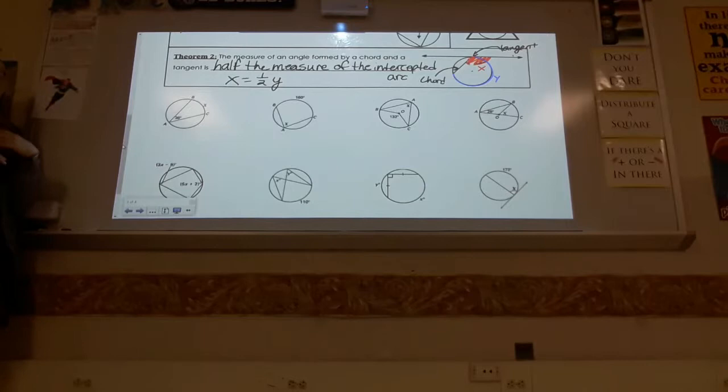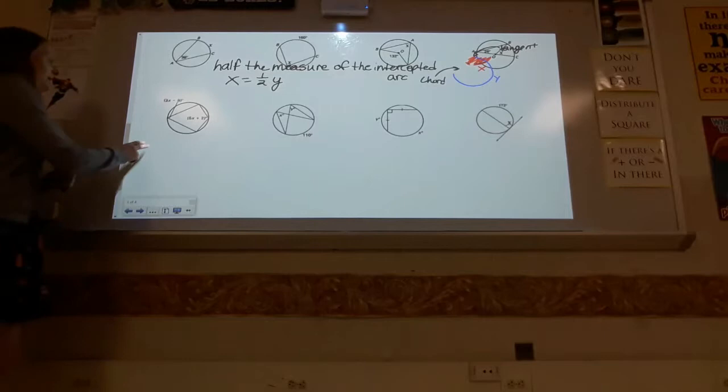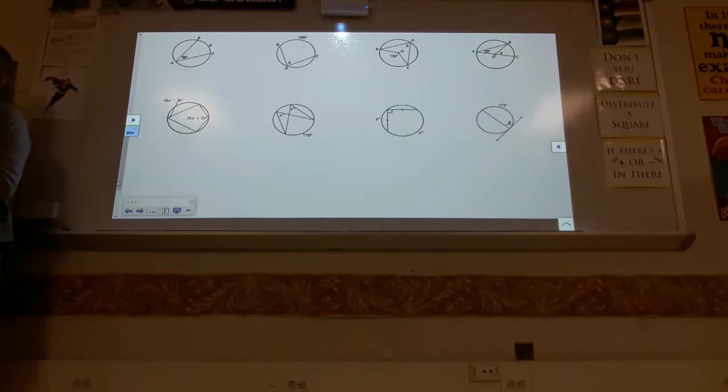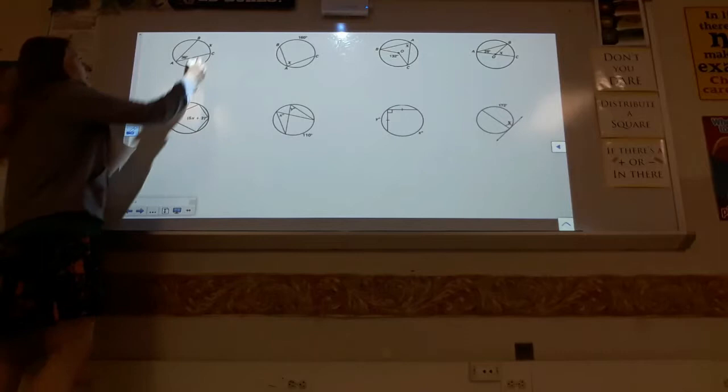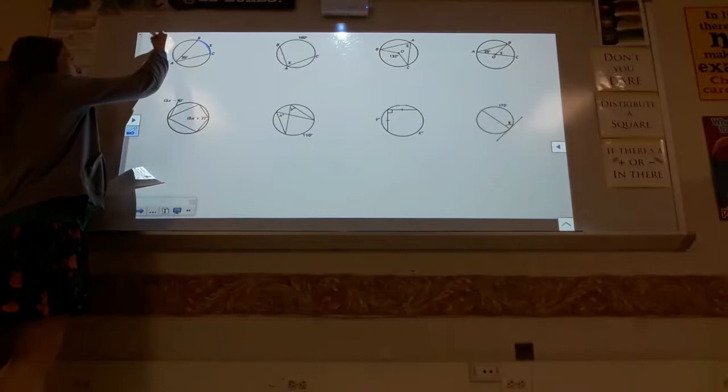So we're working with Theorem 1 and its corollaries, and Theorem 2. Let's look at practice problems. I do expect you to show work and you could note which theorem or corollary you're using. For this first problem, I'm looking for the arc and I know the angle — I'll use Theorem 1.